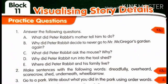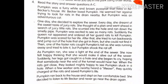Coming to the fourth question: you want to read the story and answer the questions in A and C. Try to read the story — it is on Pumpkin. Pumpkin was a furry, white and brown pussy cat that lived in Mr. Becker's house. Try to read the story and answer the questions given on page number 77.